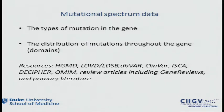It's also often important to look closely at where mutations occur within the gene, which can have a lot of relevance to interpretation. For many Mendelian diseases the mutations are very clustered, and for different diseases caused by mutation in the same gene you get different clustering patterns, so a very close look at that can often be very important.